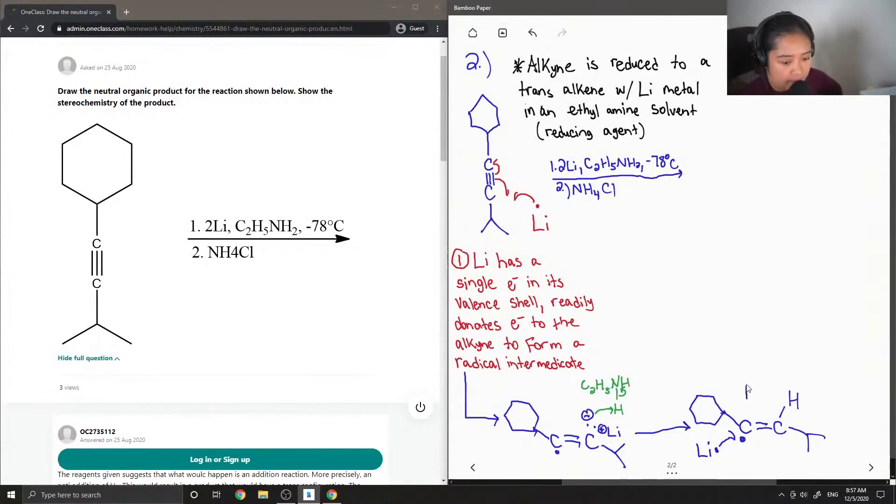And then our next structure has that same negatively charged carbon to our other intermediate. Okay, so now we have kind of a similar structure to our other intermediate.